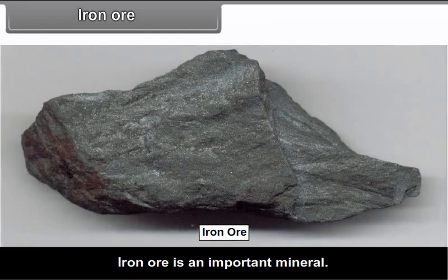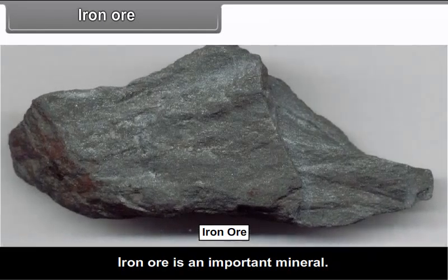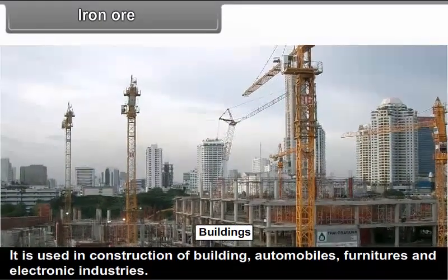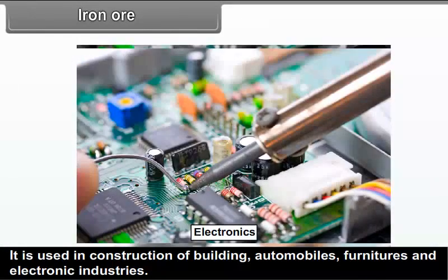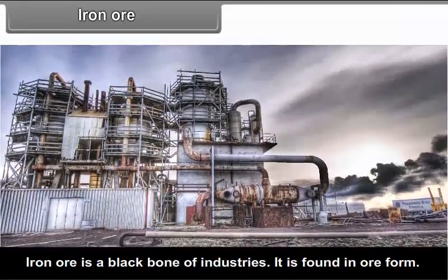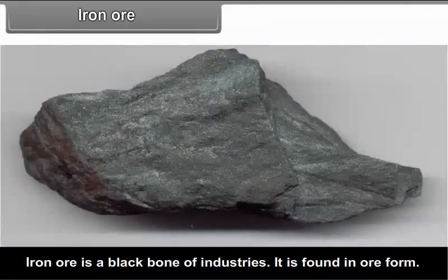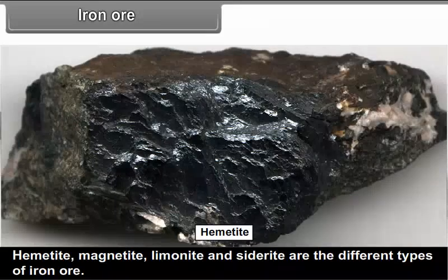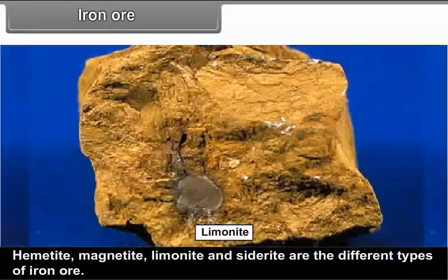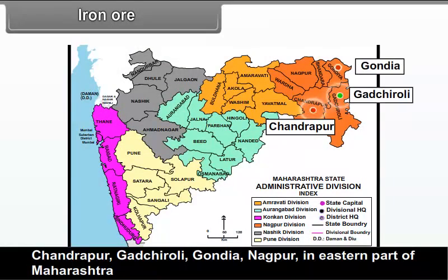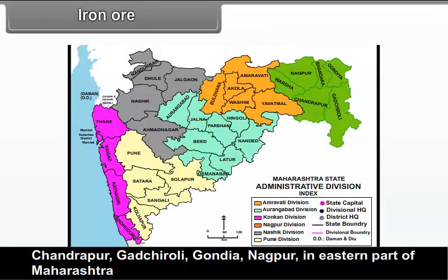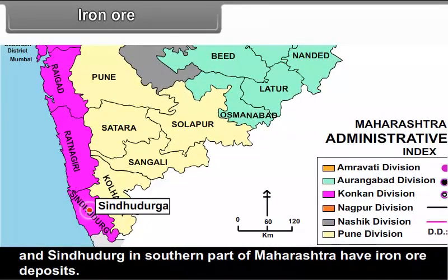Iron Ore: Iron ore is an important mineral used in construction of buildings, automobiles, furniture and electronic industries. Iron ore is a backbone of industries and is found in ore form. Hematite, magnetite, limonite and siderite are the different types of iron ore. Chandrapur, Gadchiroli, Gondiya, Nagpur in eastern Maharashtra and Sindhudurg in southern Maharashtra have iron ore deposits.